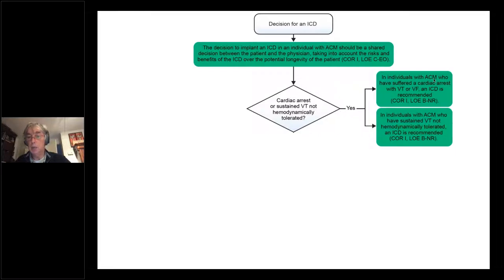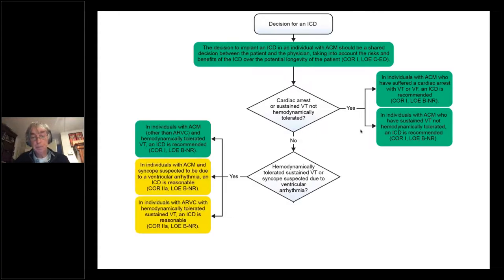Patients who should be where the discussion should be done is obviously a patient after a cardiac arrest or after a sustained VT that is not hemodynamically tolerated. In all these cases, there is a class one recommendation for an ICD implantation. That is either suffered from a cardiac arrest with VT or VF, ICD is recommended, or in those cases where there is a sustained VT that is not well tolerated. That is a class one indication in all patients.